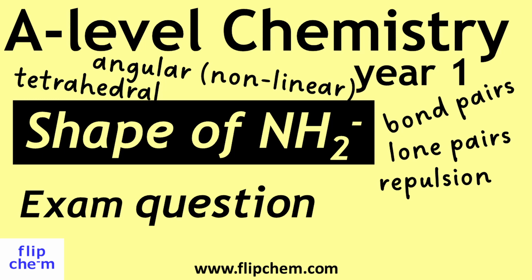Welcome everyone. Compound ions are groups of atoms joined by covalent bonds that have an overall charge. NH2- is an example of a compound ion. In this video, I'll explain how to work out the shape and bond angle in the NH2- ion. It's an A-level chemistry exam question. Details are in the description. Let's get started.